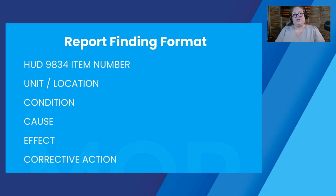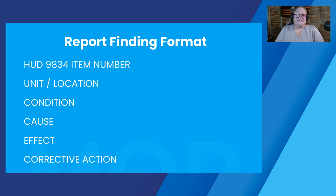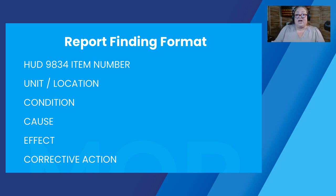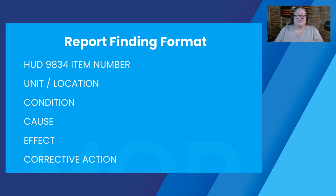Here's what the findings are going to look like. When you get your report, the findings are going to be noted with the HUD 9834 item number — that's the question number in that form. The unit or location, the condition, what the issue is, the cause — for instance, income wasn't calculated correctly because they didn't include income from assets — the effect, such as did it change the tenant rent or is HUD paying more or less than they should have, and what corrective action is needed.